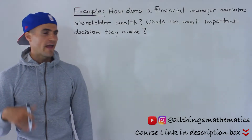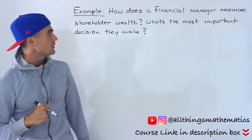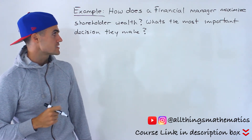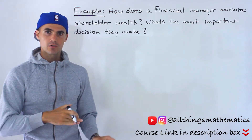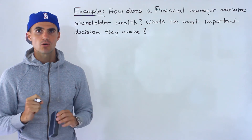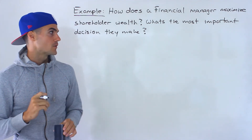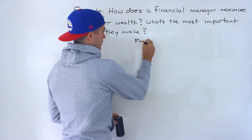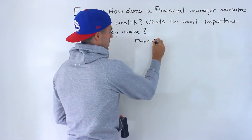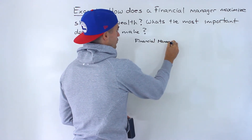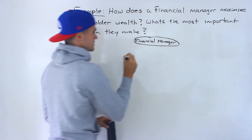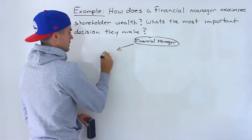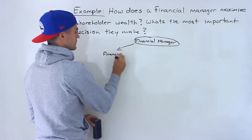What's up, everyone? Welcome back. Patrick here. In this next video, what we're going to talk about is how does a financial manager maximize shareholder wealth and what's the most important decision that they make? As we mentioned in a previous video, the goal of financial management is to maximize shareholder wealth, but how do they go about doing so? A financial manager, in general, has three types of decisions that they're going to make. The first decision is the financing decisions.